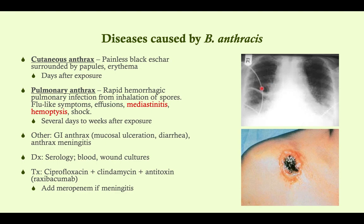This occurs days to weeks after exposure, so if you have a patient that you think may have been exposed to anthrax, you want to treat them immediately. GI anthrax is typically from contaminated meat — it can cause ulceration of the mucous membranes along the GI tract and cause diarrhea. This is pretty self-limited, but you need to treat it with antibiotics also because it can get into the bloodstream. Anthrax meningitis can be a sequela of all of these forms — it gets into the bloodstream, spreads to the cerebrospinal fluid, and causes a meningitis with characteristic CSF findings: high protein, low glucose, and white blood cells.